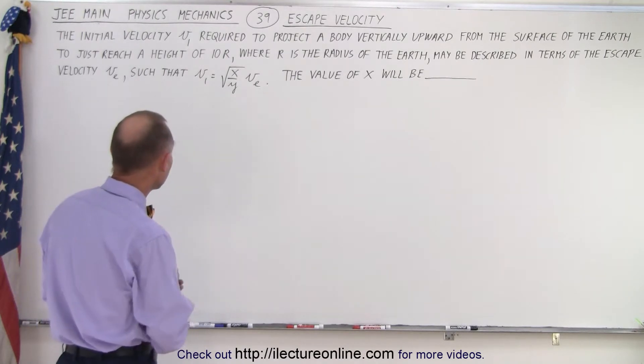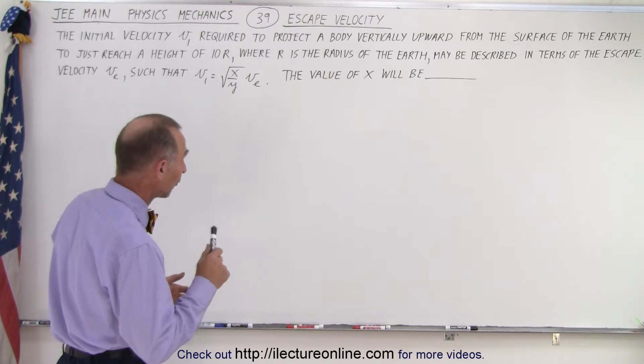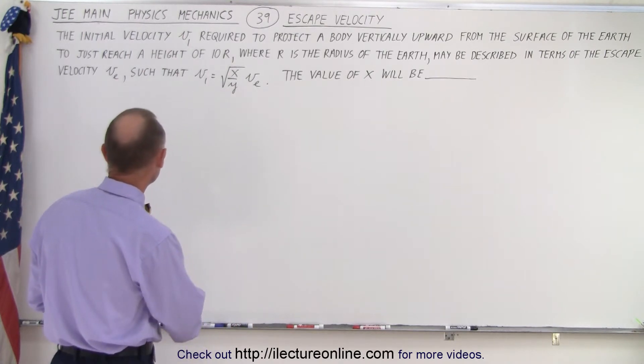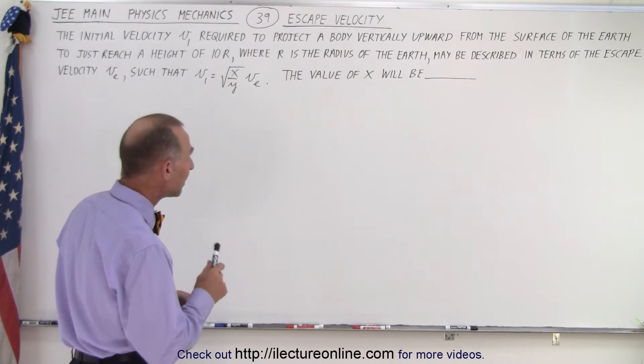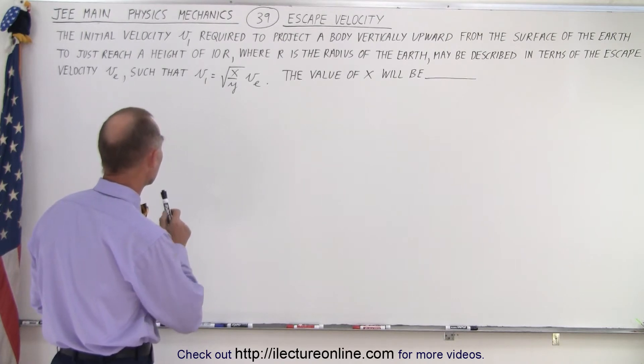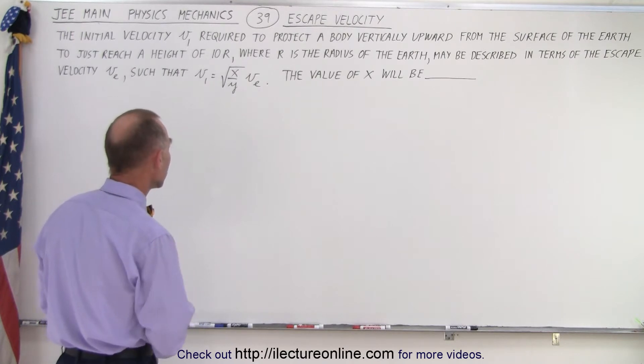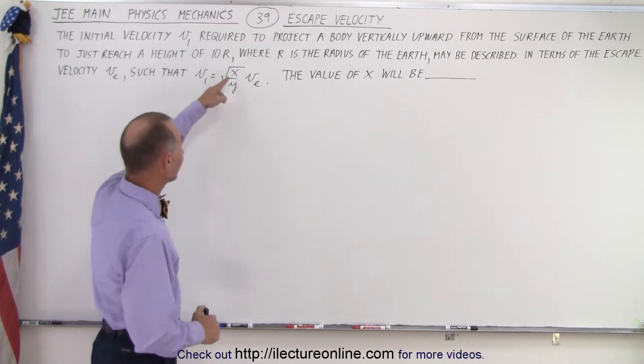The initial velocity v1 required to project the body vertically upward from the surface of the earth to just reach a height of 10r, where r is the radius of the earth, may be described in terms of the escape velocity v_e such that v1 equals the square root of x over y times v_e. The value of x will be, and so we're looking for this value here.